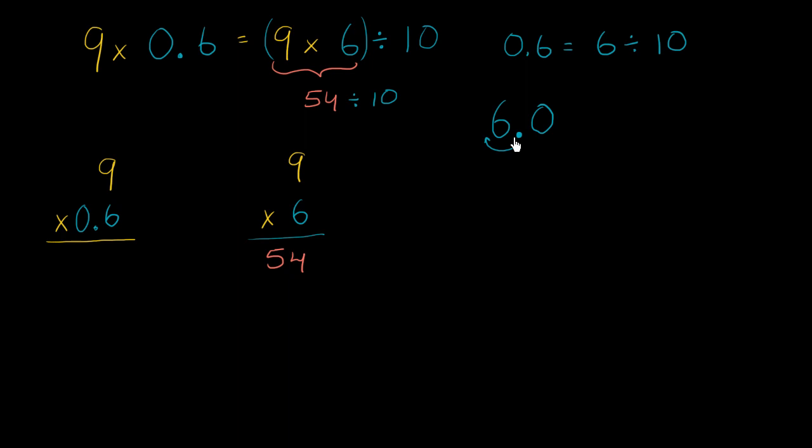Each place represents 10 times as much as the place to its right, or each place represents one tenth of the place to the left. So 54 divided by 10, you could start with 54, and I'll put a 0 here after the decimal. When you divide by 10, that's equivalent to shifting the decimal one to the left. This is going to be equal to 5.4.